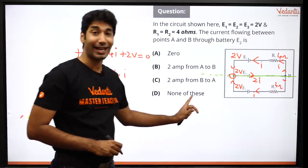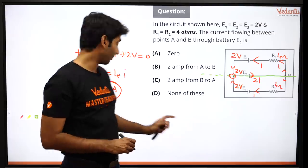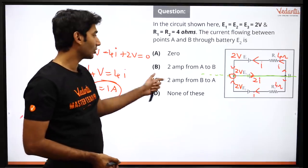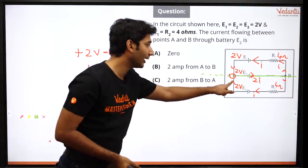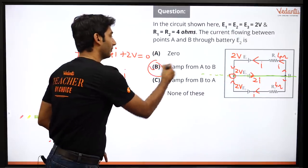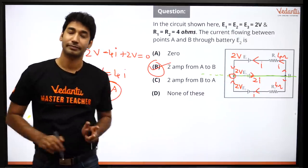From A to B how much current is going, 2i is going meaning 2 ampere is going. So the answer is 2 ampere from A to B, 2 ampere from A to B, simple, easy.